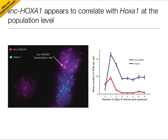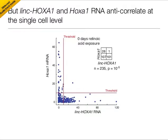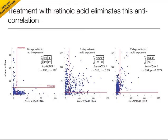But the single-cell analysis revealed something different. Look at this picture a bit more. You'll see that you can see both lincHoxay1 and Hoxay1 in the cell population, but individual cells either express one or the other, but never both. Counting up a bunch of cells revealed that this is indeed the pattern. So this anticorrelation actually suggests that lincHoxay1 may negatively regulate Hoxay1. We found that the anticorrelation disappears upon the addition of retinoic acid. What we think is going on is that the addition of retinoic acid actually overrides the negative regulatory interaction between lincHoxay1 and Hoxay1.